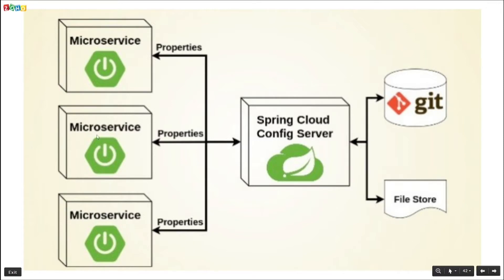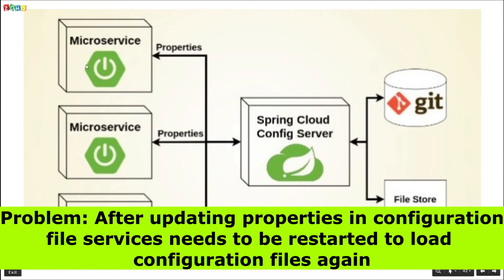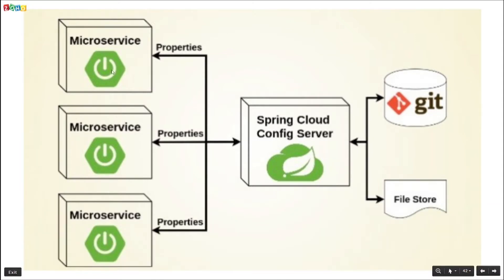A microservice architecture is a distributed system where we have multiple microservices that may be located on different servers. In that case, each microservice has its own property file. If a microservice architecture has more than 50 or 100 microservices, we have to manage each configuration file separately. The biggest problem is that whenever we need to change any property, we have to restart or redeploy the service.